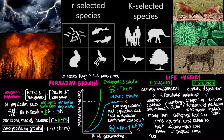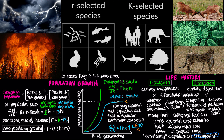K-selected species often exhibit semelparity, also known as big-bang reproduction, in which individuals reproduce a large amount of offspring once and die — such as Pacific salmon. K-selected species may also exhibit iteroparity, or repeated reproduction, producing offspring repeatedly. Highly variable or unpredictable environments likely favor big-bang reproduction, while stable, dependable environments may favor repeated reproduction.